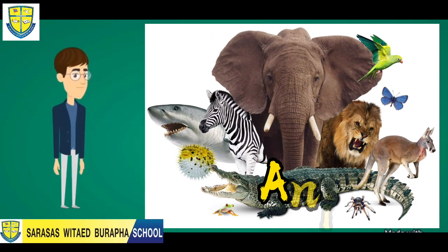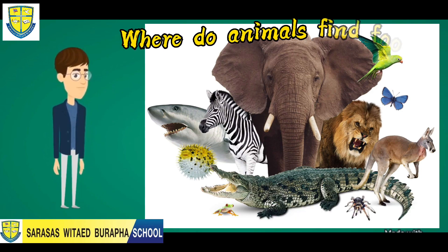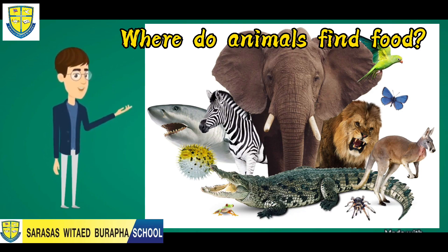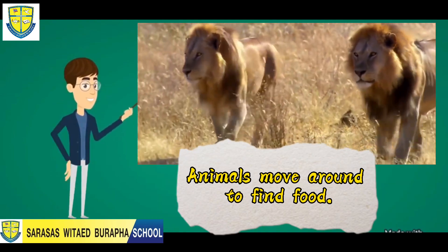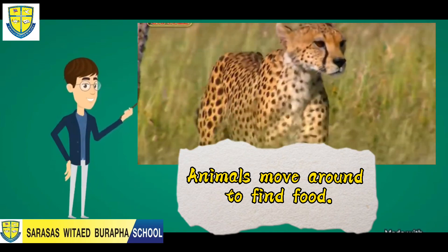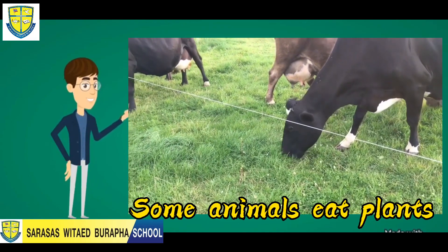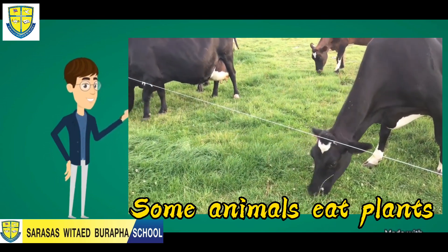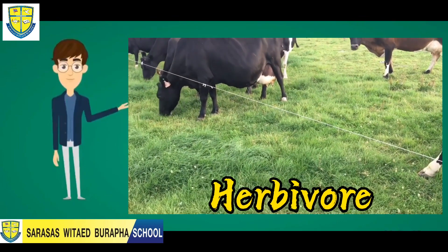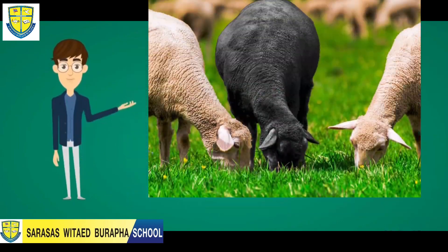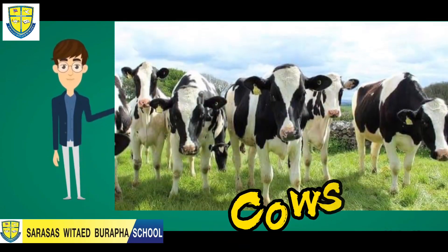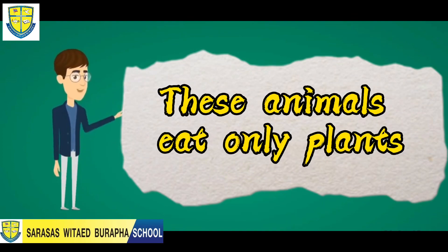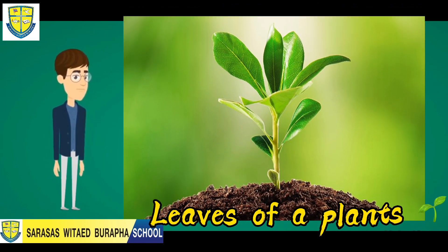Next, let's talk about animals. Where do animals find food? Unlike plants, animals move around to find food. Some animals only eat plants, and we call these animals herbivores — just like sheep, goats, and even cows. These animals eat only plants, like grass and leaves.